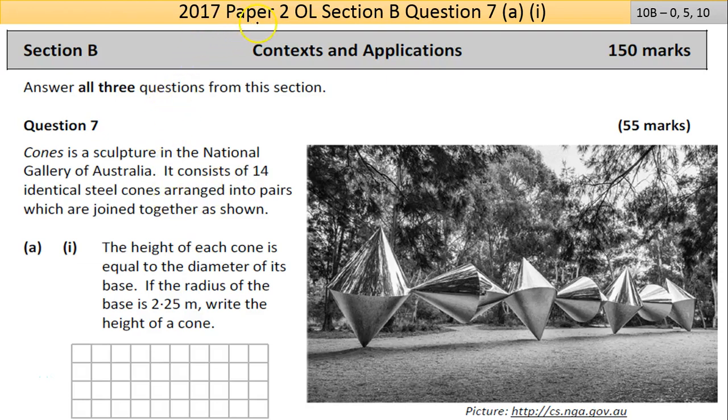Okay, so here we are on the 2017 Paper 2 Maths Ordinary Level Section B, Question 7. The questions in Section B are always much longer, but if you take it slow and read carefully, you can pick up at least attempts in a lot of questions.